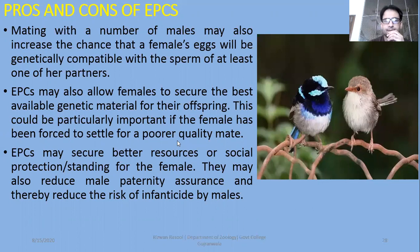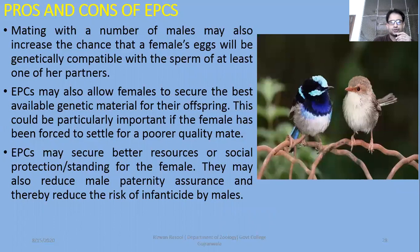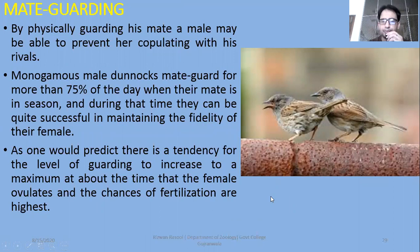This could be particularly important if the female has been forced to settle with a poorer quality male. Extra pair copulation may secure better resources or social protection for the female. They may also reduce male paternity assurance and thereby reduce the risk of infanticide by males. Infanticide is a common strategy in certain populations. During sexual conflict, mate guarding — where a male guards and prevents other males from copulating with his partner — is another strategy. Monogamous male dunnocks mate guard for more than 75% of the day when their mate is in the laying season.